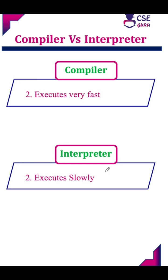Since a compiler converts the complete source program at a time, the execution will be very fast. In an interpreter, since it does the line-by-line translation, the execution will be very slow.